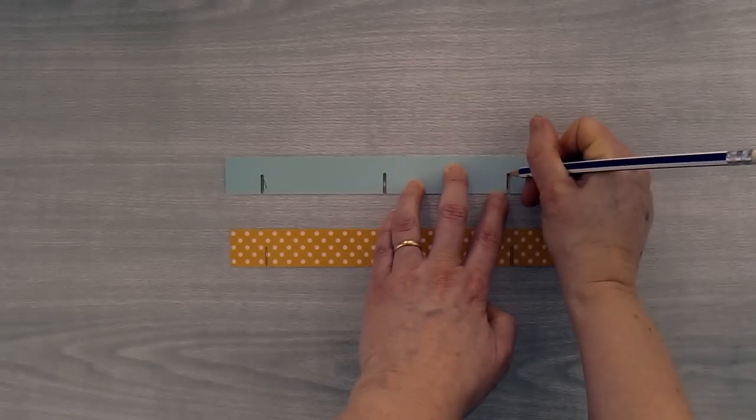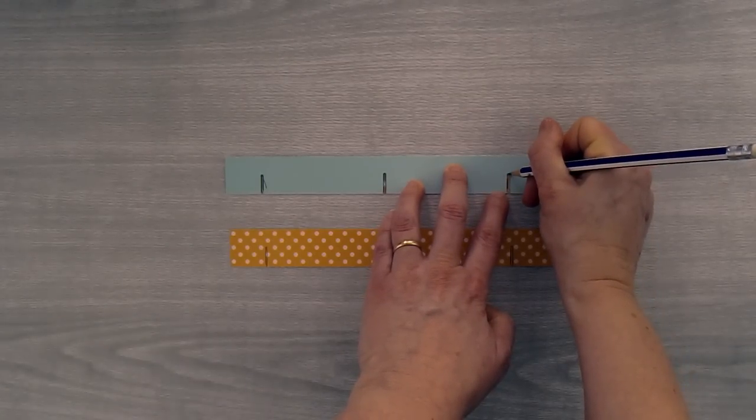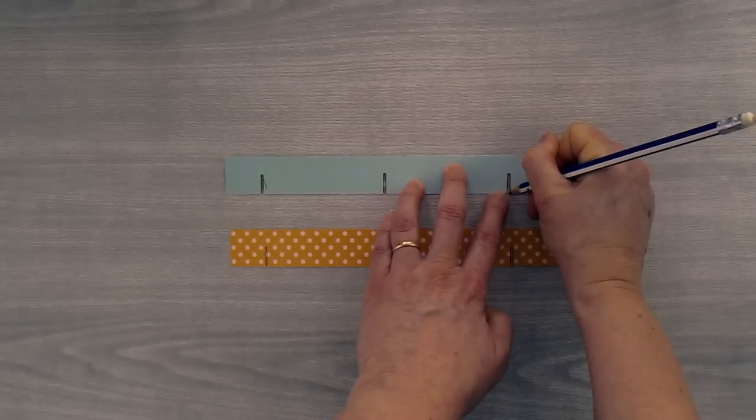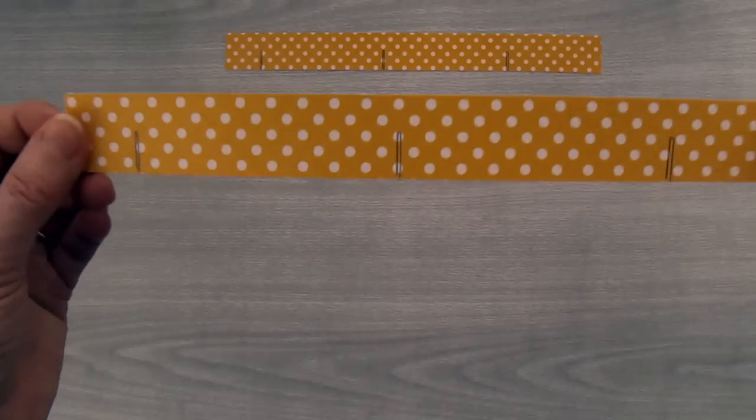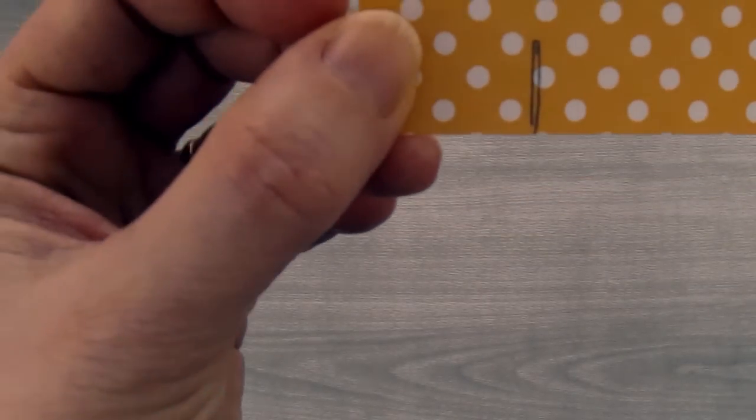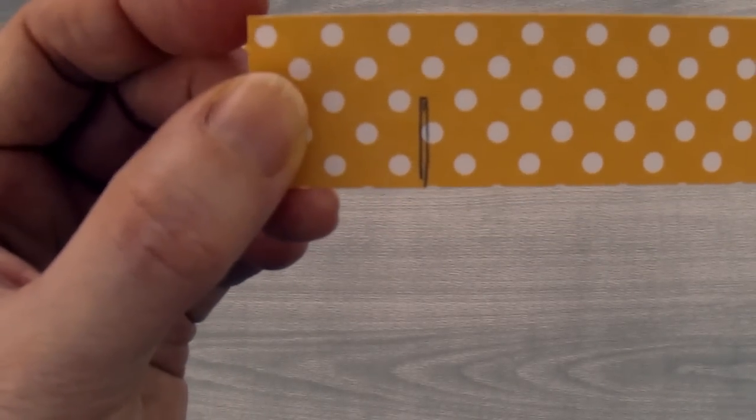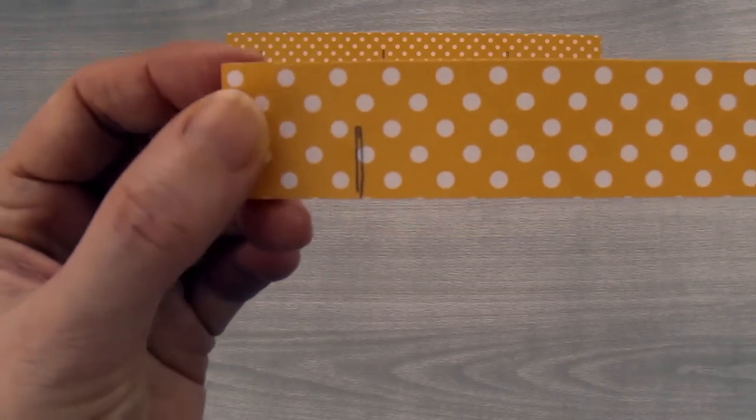I'm tracing up one side to the top and then back down. There are our two butterfly strips, and here's what the strip looks like. You can see how I've traced down one side, up to the top, and back down the other side.